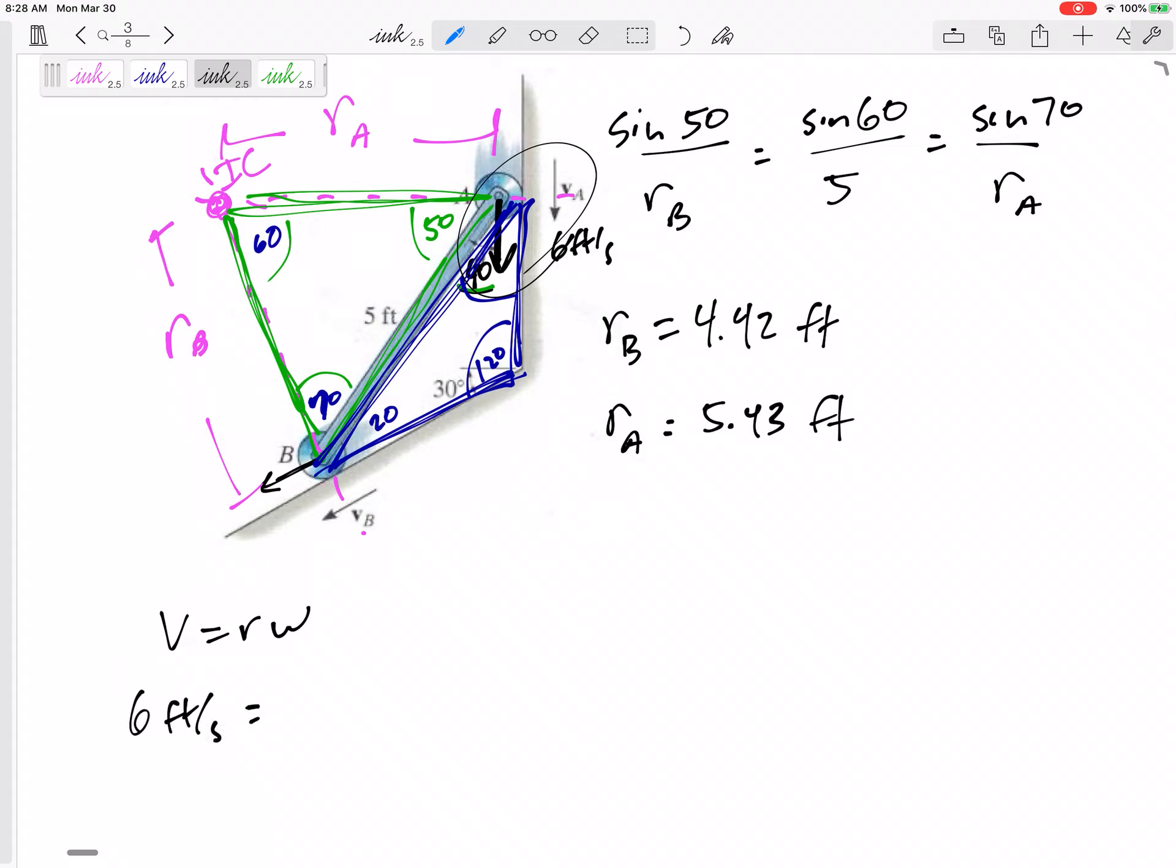V equals R omega. Like, if I know this is 6, I'll put some units in here, and I know that the distance it is away from its instantaneous center, 5.43... 5.43... Then, what is the omega of the disk, the omega of bar AB?